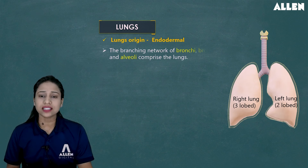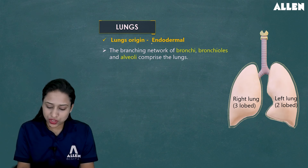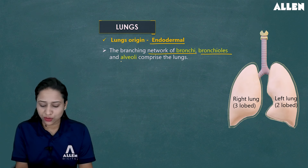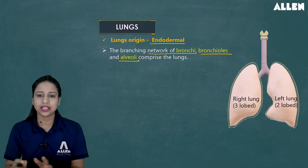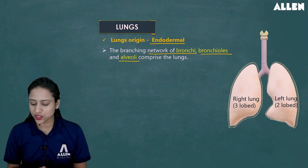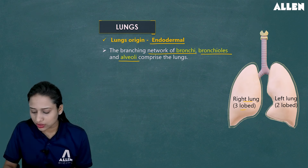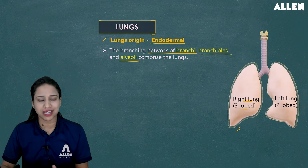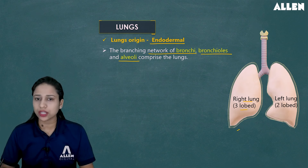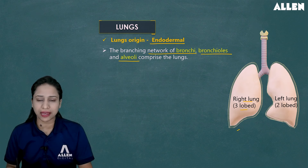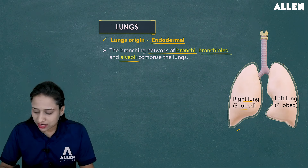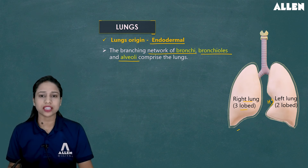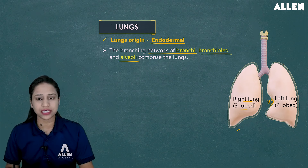Now let's move to the lungs. The lungs have endodermal origin. The network of bronchi, bronchioles, and alveoli comprises the lungs. Looking at the structure, the right lung is comparatively shorter in length than the left lung because the liver is present on the right side. The left lung is slightly narrower than the right lung because a notch-like structure is present there where the heart is placed.